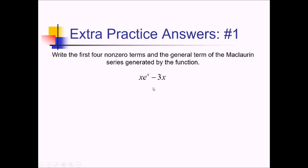The key here for getting started is the e to the x function. We know the Maclaurin Series for that: it's 1 plus x plus x squared over 2 factorial plus x cubed over 3 factorial — those are the first four non-zero terms. The general term is x to the n over n factorial.